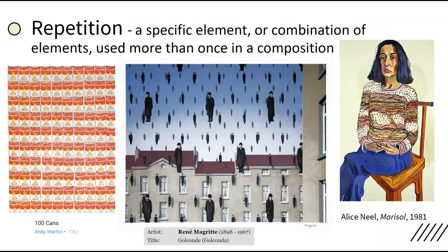Repetition is a specific element or combination of elements used more than once in a composition. Andy Warhol uses repetition with his exact repetition of Campbell's soup cans. McGree also uses repetition, but each figure is a slightly different size and turns a different direction. Exact repetition of elements is called pattern and is often used in decorative contexts, like fabric. The woman in Alice Neel's painting, Marisol, is wearing a patterned sweater.